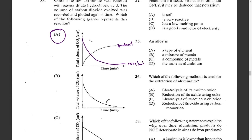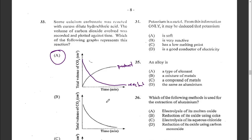Question thirty-four: from the given information, it may be deduced that potassium is a good conductor of electricity. The answer is D. Question thirty-five: an alloy is — A: a type of element, B: a mixture of metals, C: a compound of metals, or D: the same as aluminum. An alloy is a mixture of metals — answer B.